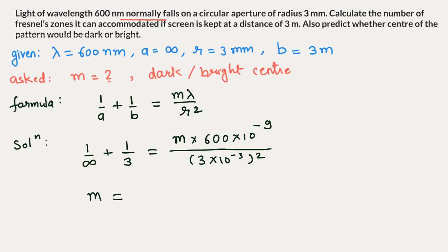Solving this, we would get 9×10⁻⁶ divided by 3 times 600 times 10⁻⁹.